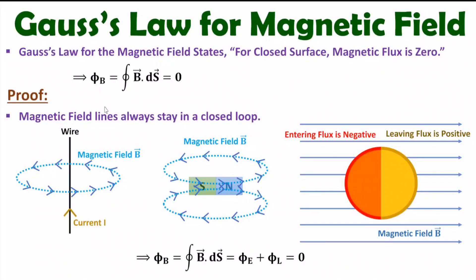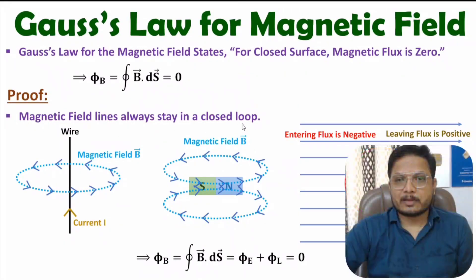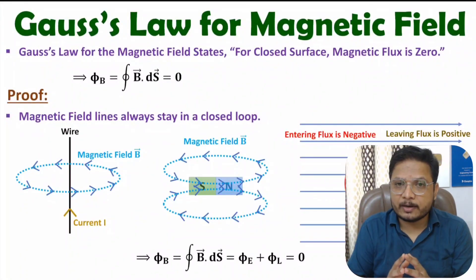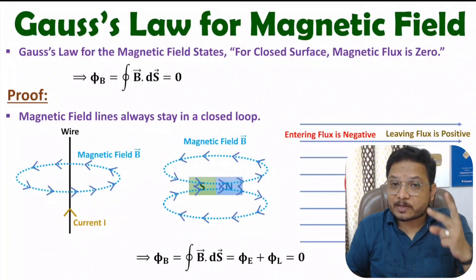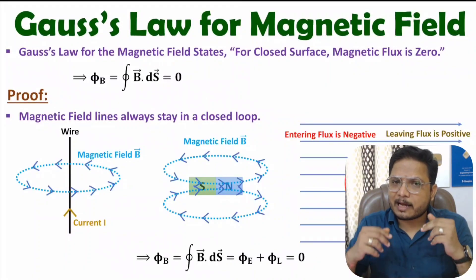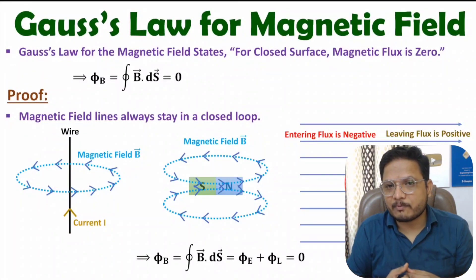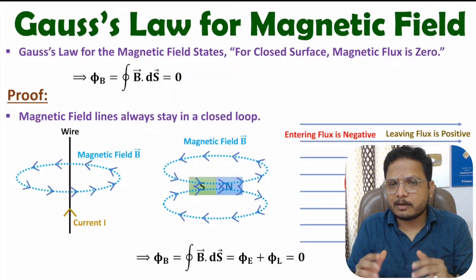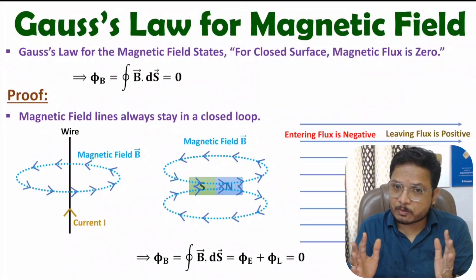So the basic statement states that for a closed surface, magnetic flux is zero, and that happens because magnetic field lines stay in a closed loop. That is Gauss's law for magnetic field. Based on this, it gives us Maxwell's second equation, which I'll be covering in future videos in this electromagnetic theory lecture series. If you'd like to share anything, note it in the comment section — I'll be happy to help. Thank you so much for watching.